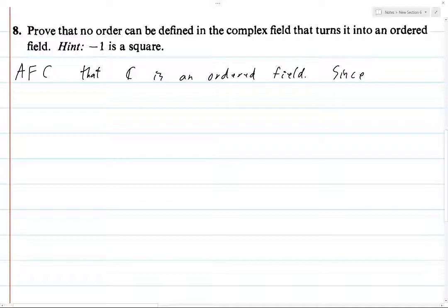Okay, so it says hint, negative one is a square. What is it the square of? It's the square of i, maybe we should look at that. So since i is in the complex plane, and since we have, we're assuming that we have an ordered field.